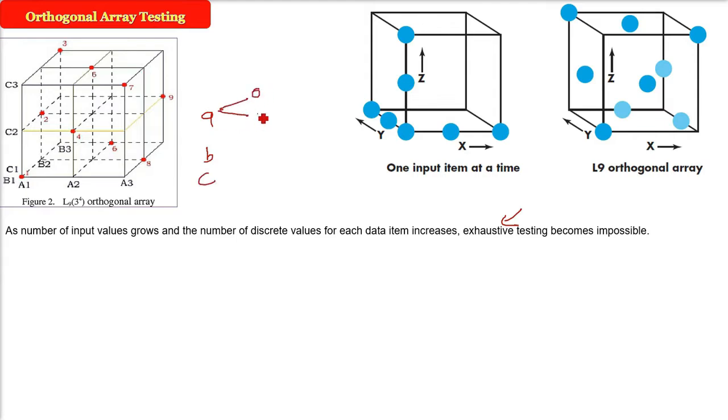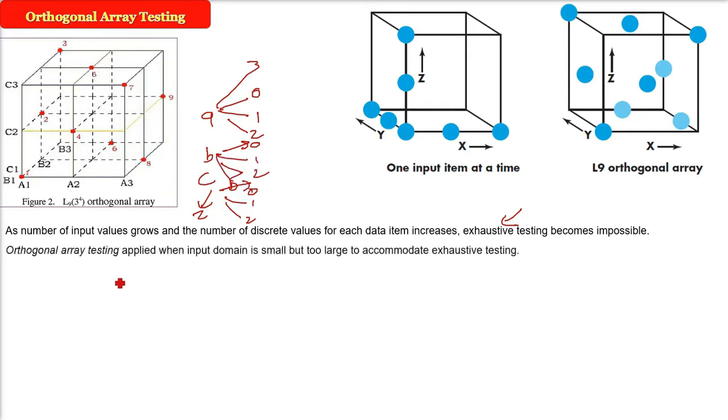For example, A can take 0, 1, 2; B can take 0, 1, 2; C can take values 0, 1, 2. Now if ABC is okay, if you go up to Z for larger products or projects, there will be various variables and various input values. A can go up to 3, B can go up to 5, and so on. So exhaustive testing is not possible.